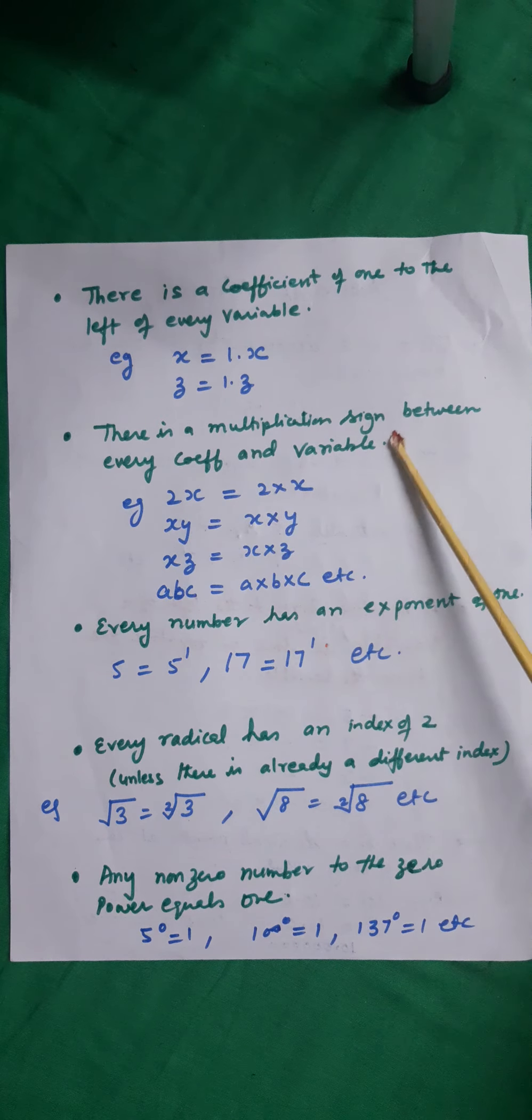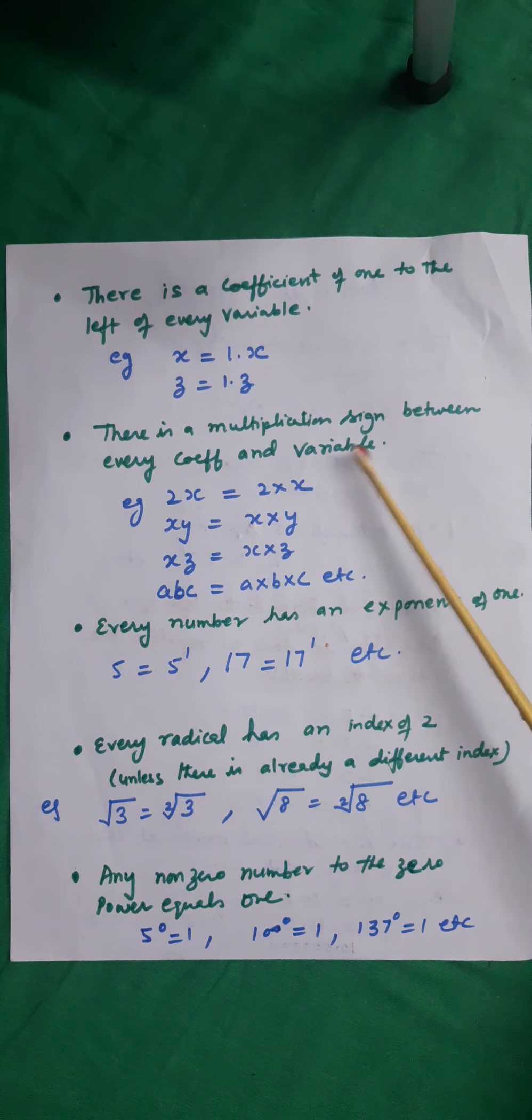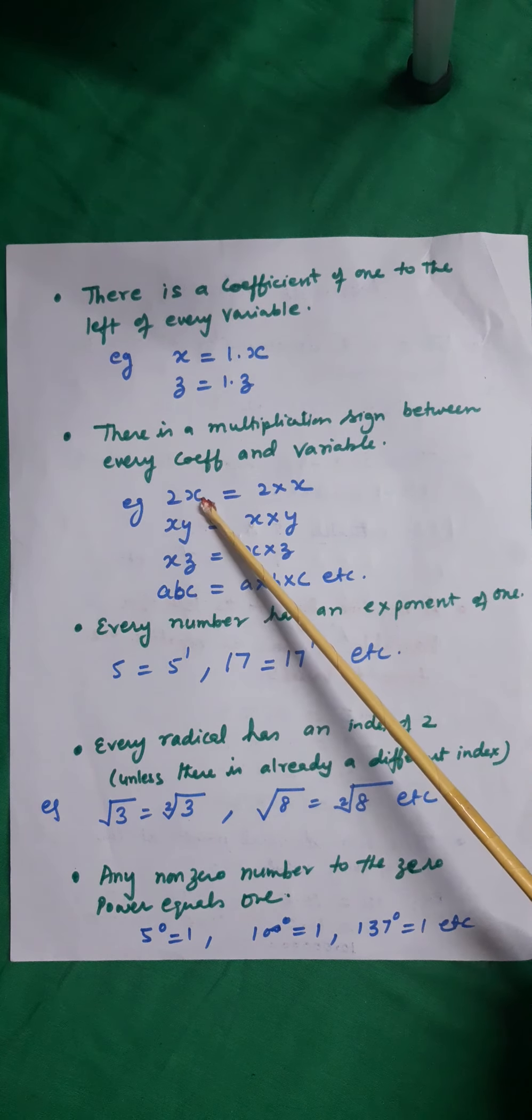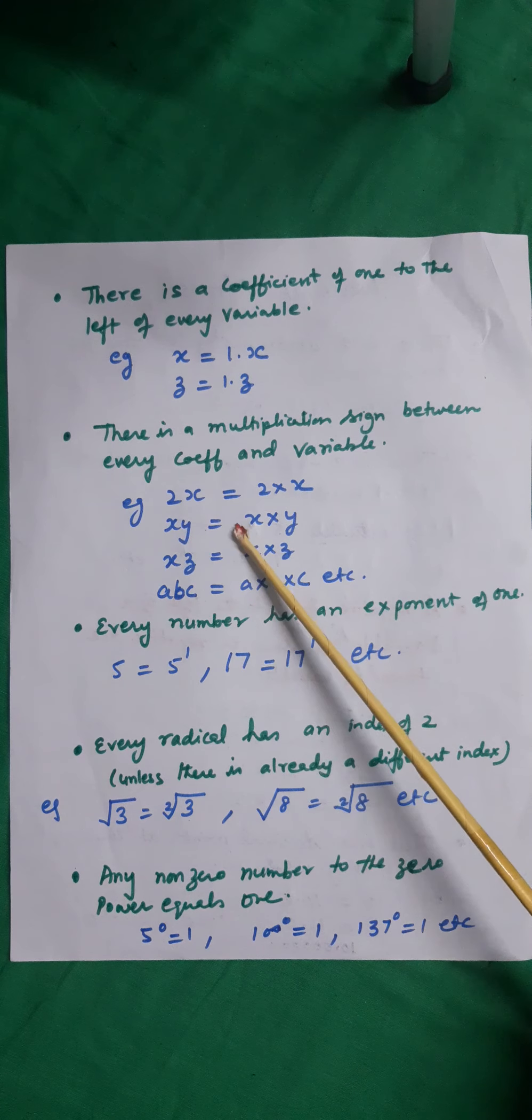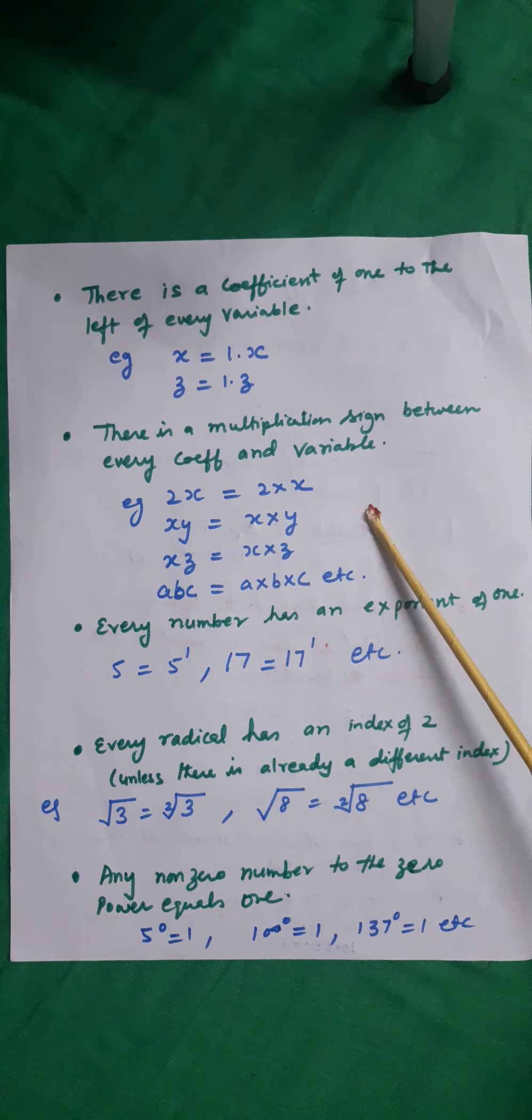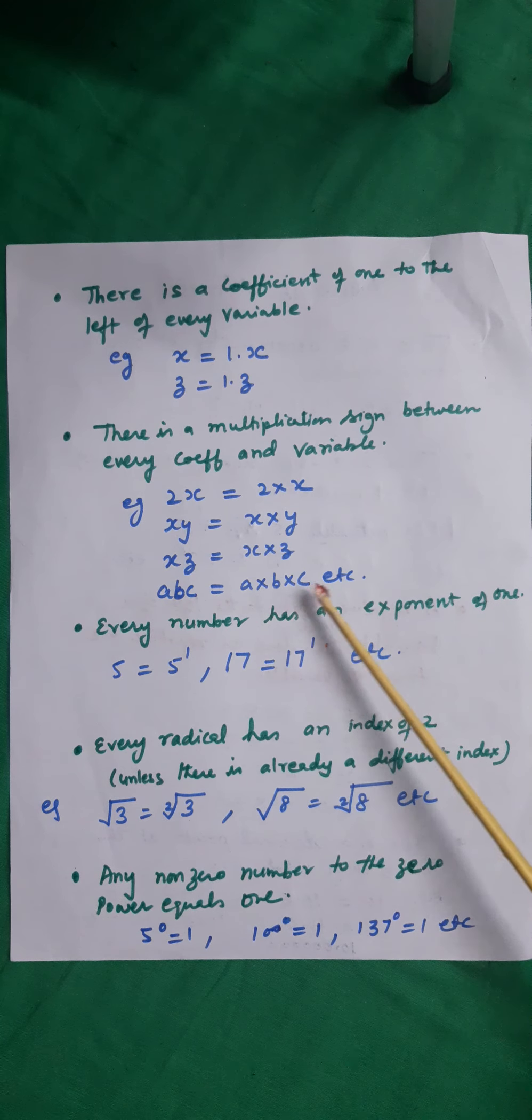There is a multiplication sign between every coefficient and variable. Whenever I have 2x, it's 2 into x. xy means x into y, xz means x into z, and abc means a into b into c.